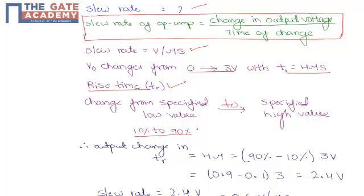Therefore, the output change in the rise time will be equivalent to 4 microseconds, that will be equal to 90 percent minus 10 percent multiplied by 3 volts. 90 percent is 0.9 minus 10 percent is 0.1 multiplied by 3 volts, which equals 2.4 volts.